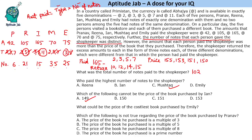The next question asks what could be the price of the costliest book purchased by Emily. Emily spent 75 in denomination 3, so she will get change in denominations 2, 5, 7, or 11. For the costliest book, she gets the least change returned. The least return is 2 + 5 + 7 = 14, so the price would be 75 − 14 = 61.